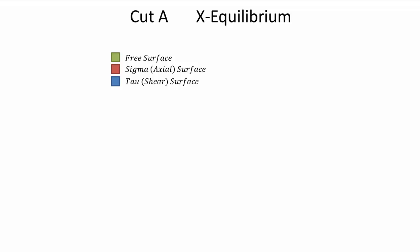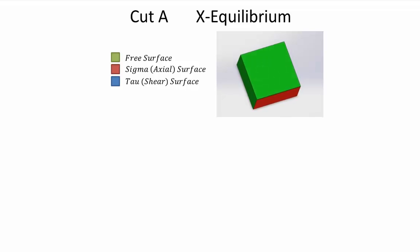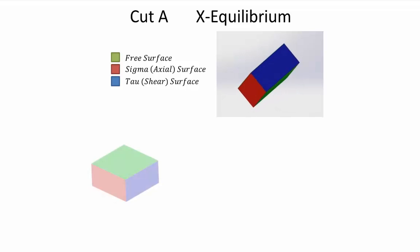The first section we're going to look at is cut A. We're going to use x equilibrium to solve for what tau is in terms of V, Q, I, and T. I'm going to show a video of a rotating 3D section of A so we can get a better idea of what we're working with. The green color will be a free surface, red will be a sigma or axial stress surface, blue will be a shear surface or tau surface.